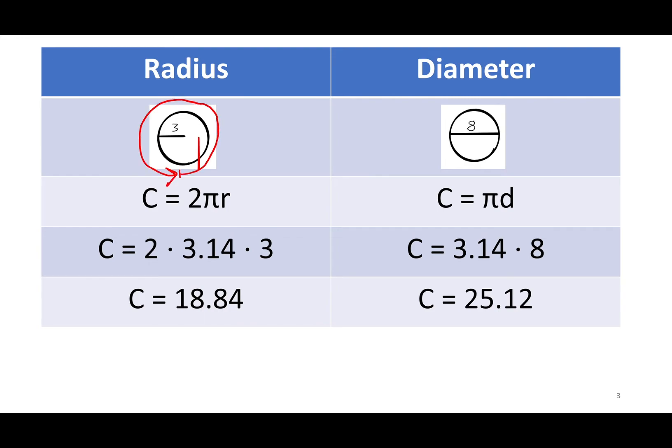Now if I were to give you a circle that has a diameter instead of a radius, you're going to opt for this formula. So pi is 3.14, and my diameter that I was given is 8. Now all I do is multiply. 3.14 times 8 gives you C equals 25.12. So once again, the circumference of this circle is 25.12.